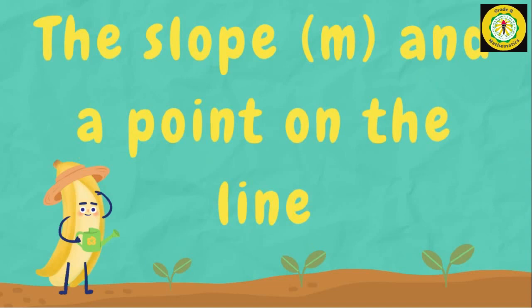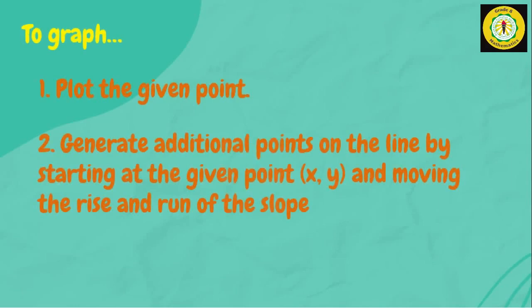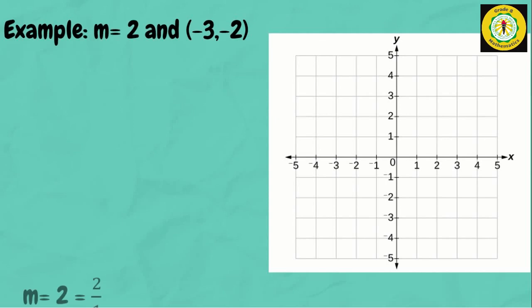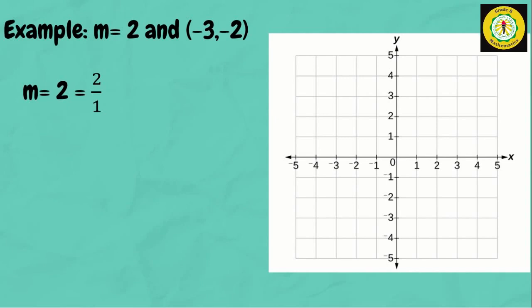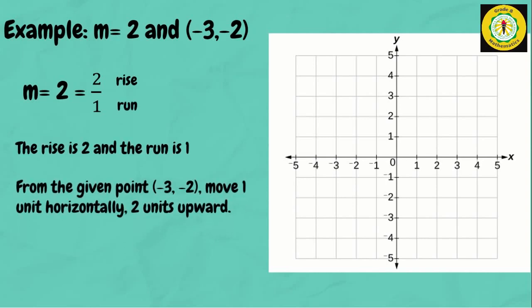Let's proceed to graphing a linear equation given the slope and a point on the line. To graph: first, plot the given point. Second, generate additional points by starting at the given point (x, y) and moving the rise and run of the slope. For example, given slope 2 and point (negative 3, negative 2): m equals 2 or 2 over 1, so the rise is 2 and the run is 1.